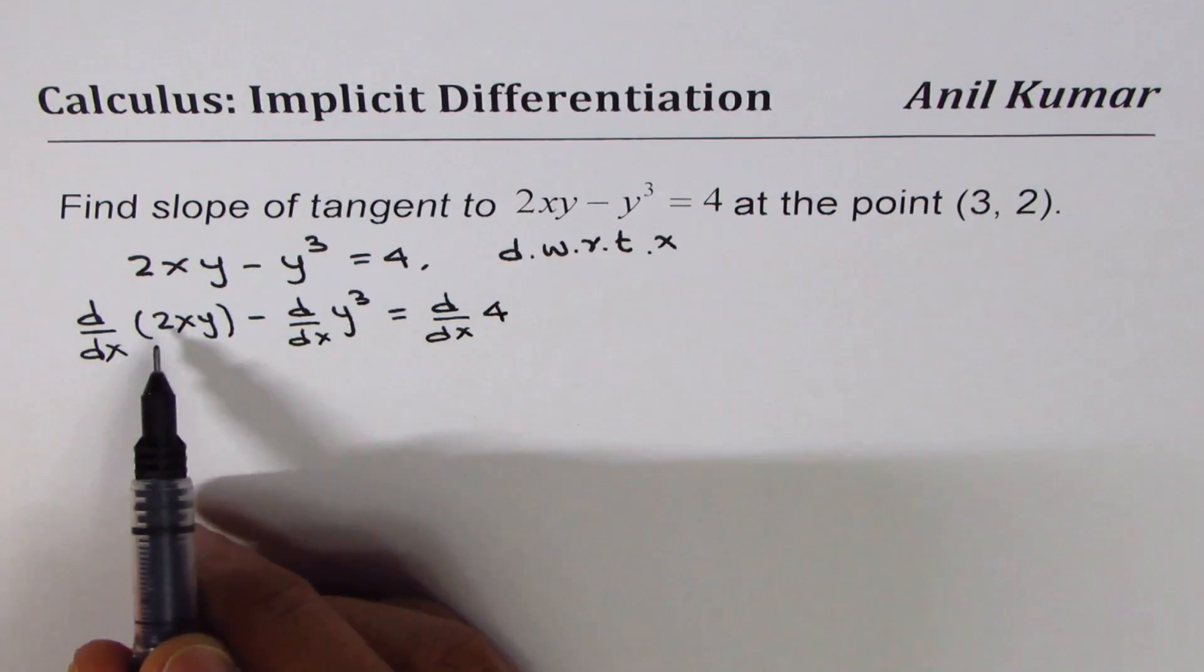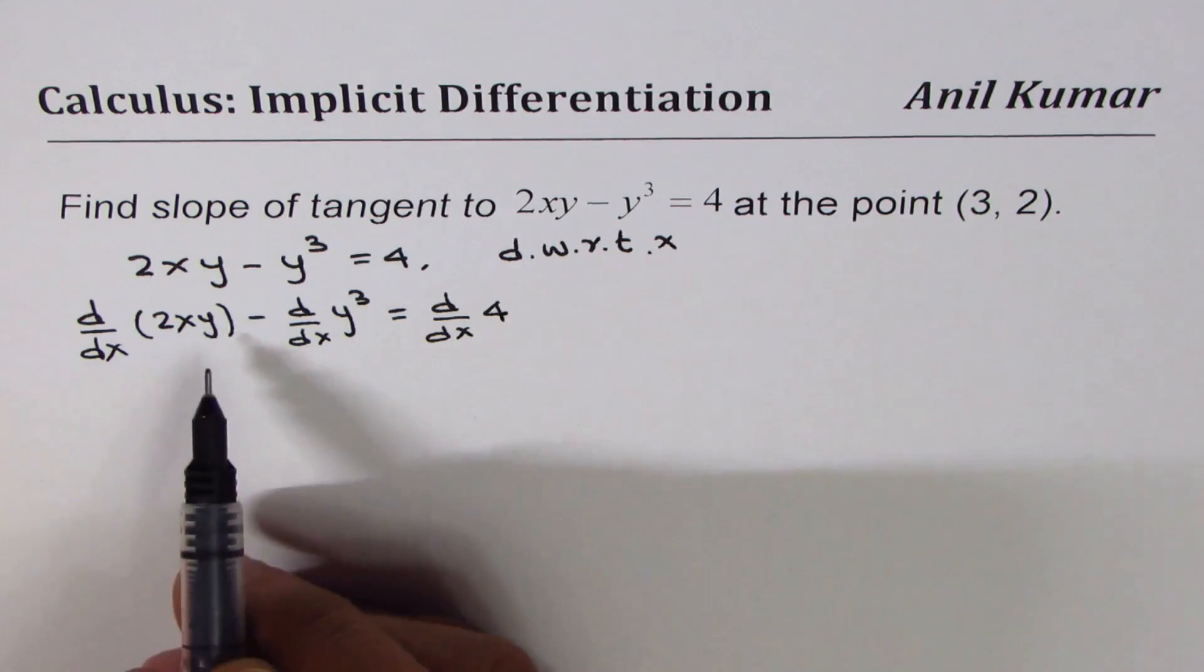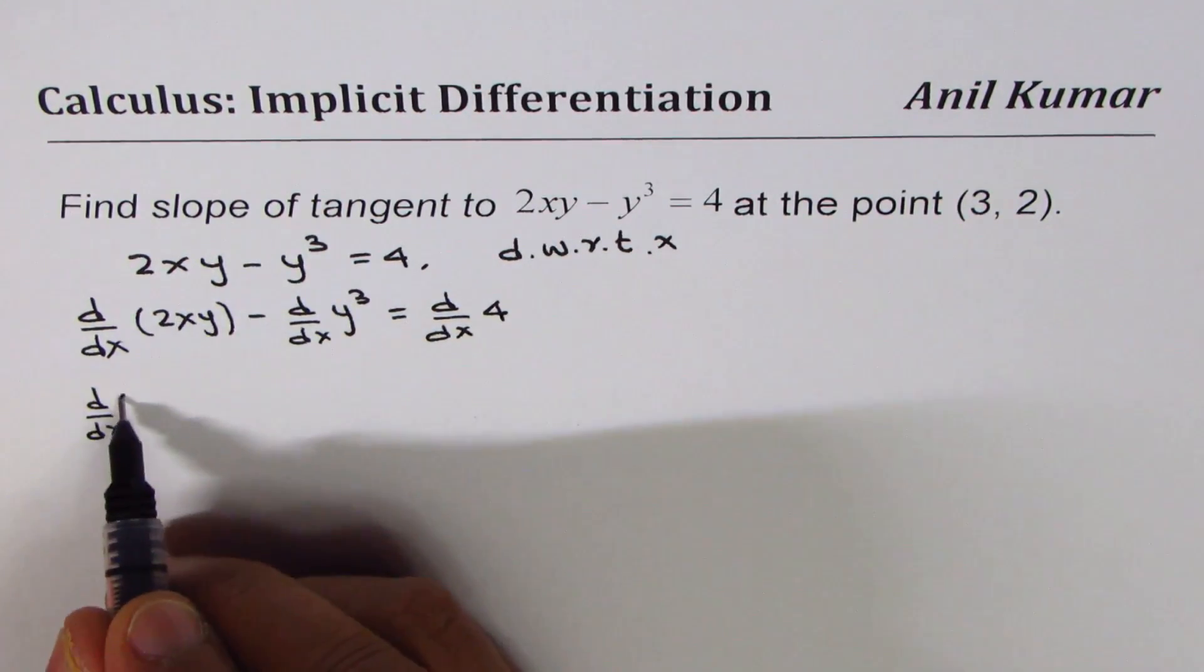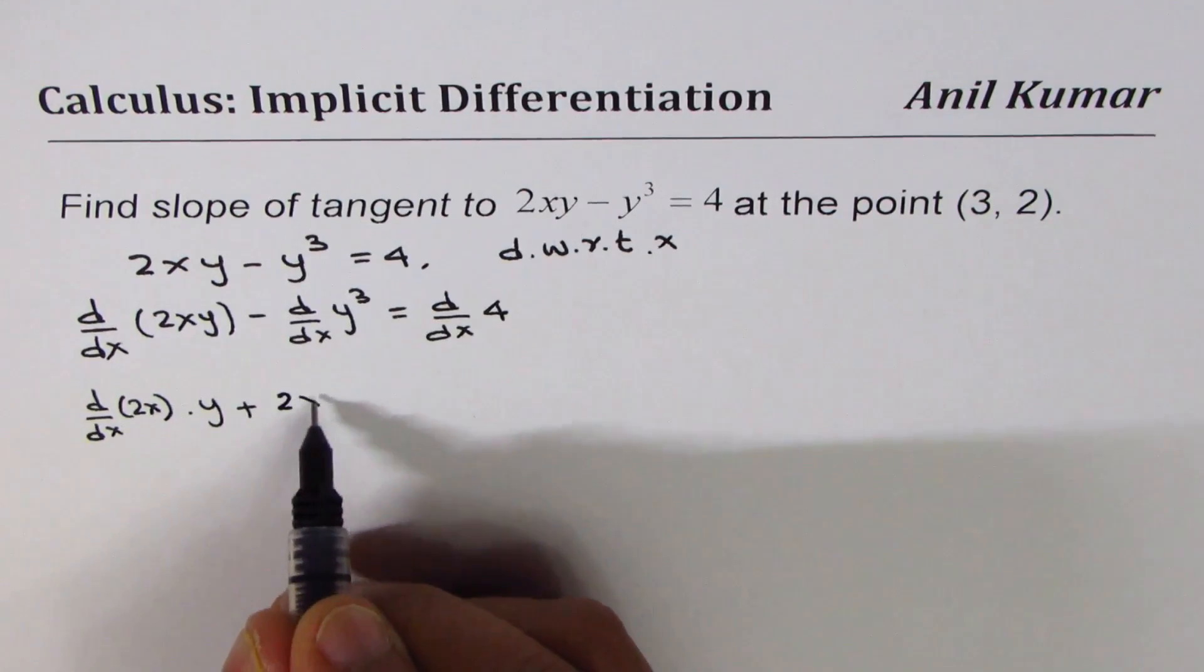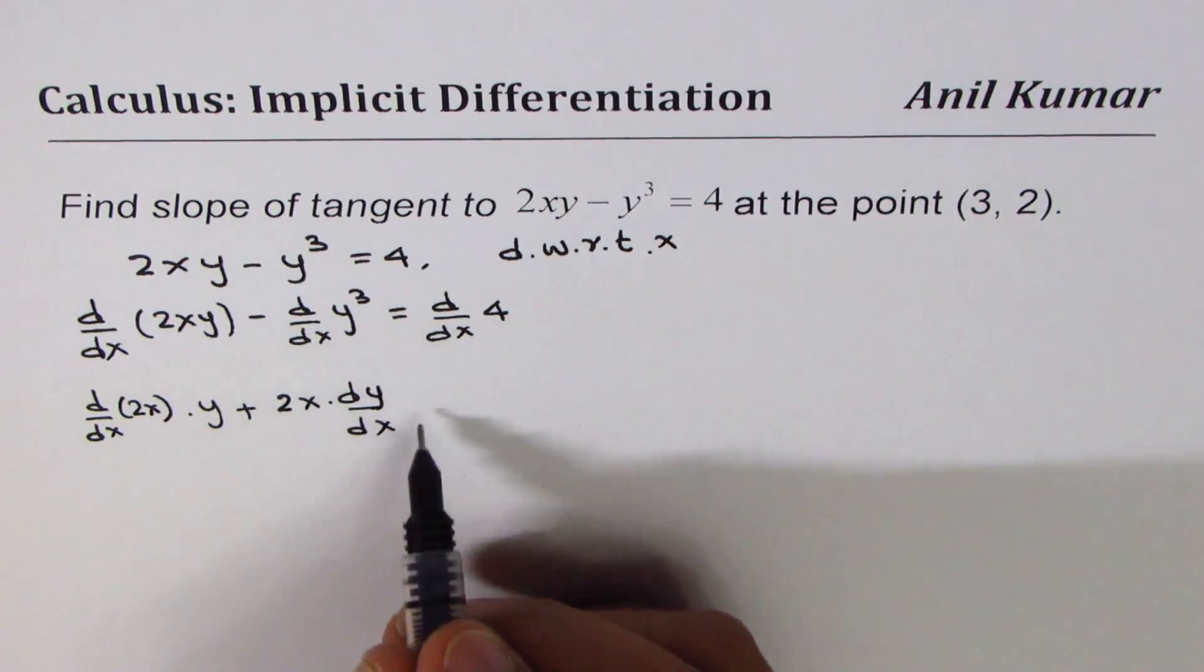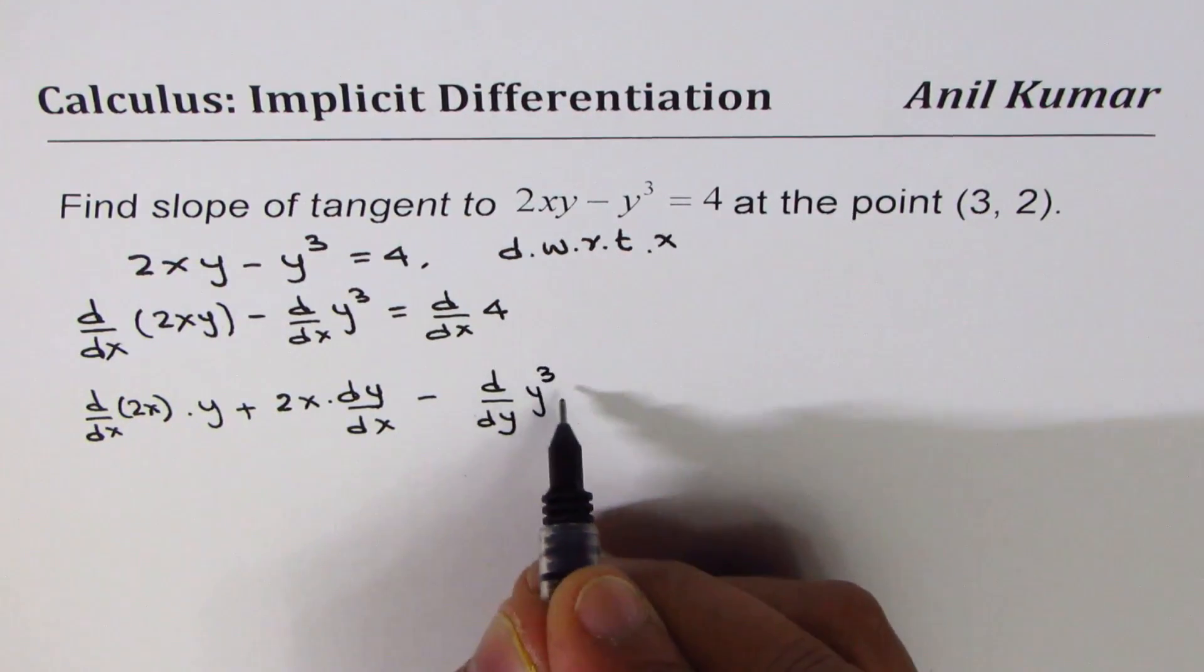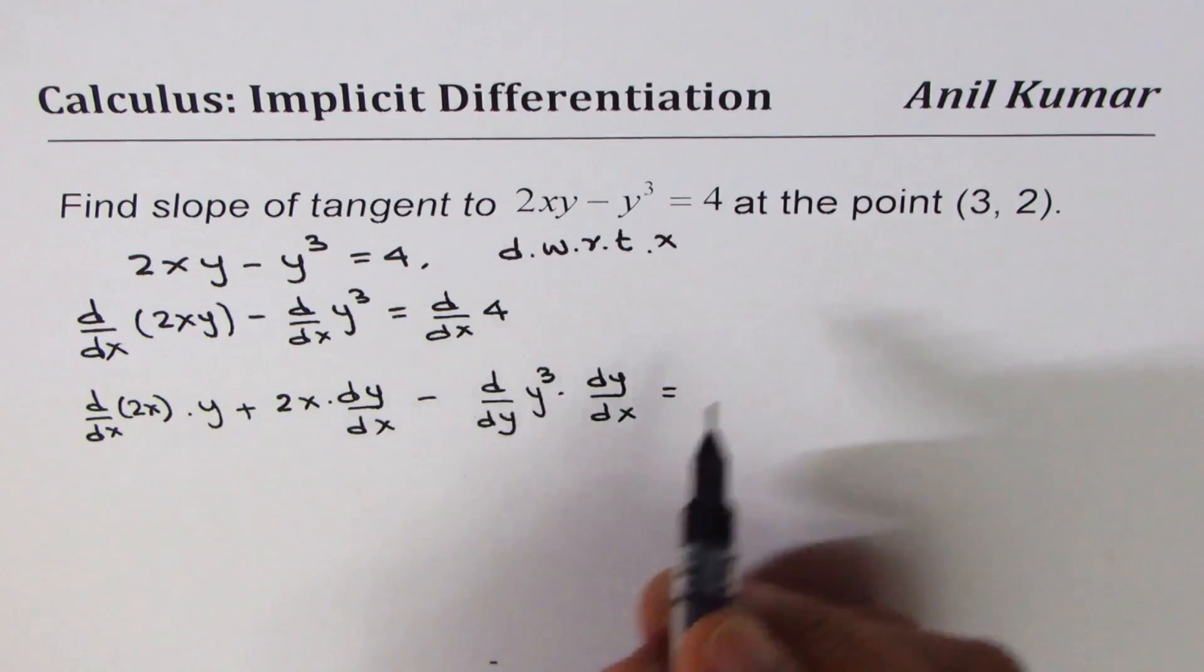The derivative of 2xy with respect to x—there are two variables involved—we'll apply the product rule. So we can write this as derivative of 2x times y plus 2x times dy/dx. For the second term we apply the chain rule. We can write this as d/dy of y³ times dy/dx. The derivative of a constant is 0.